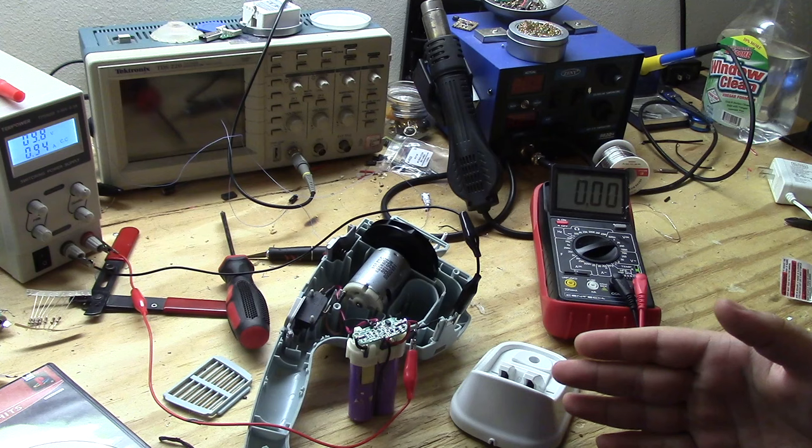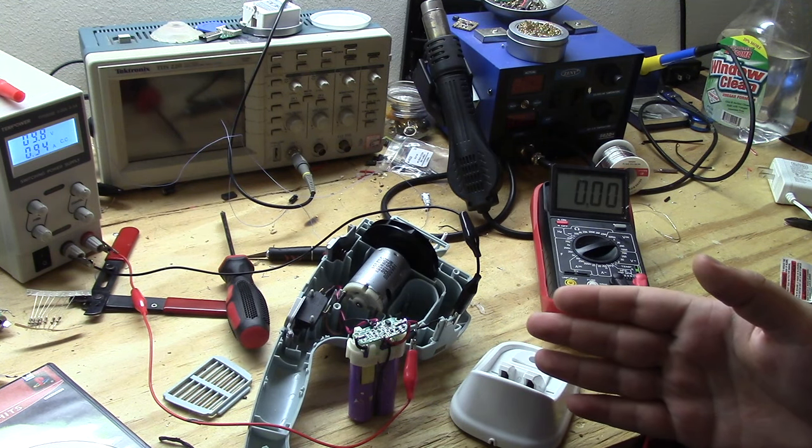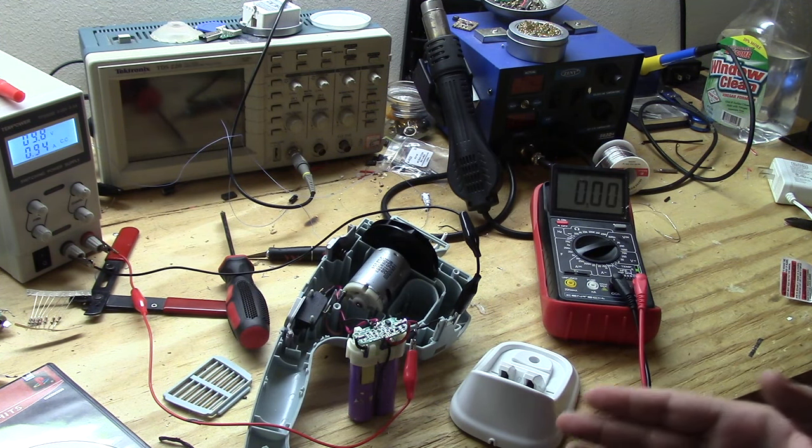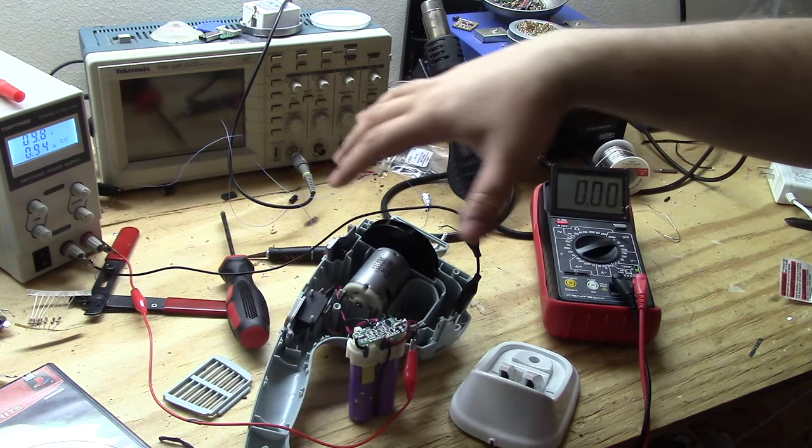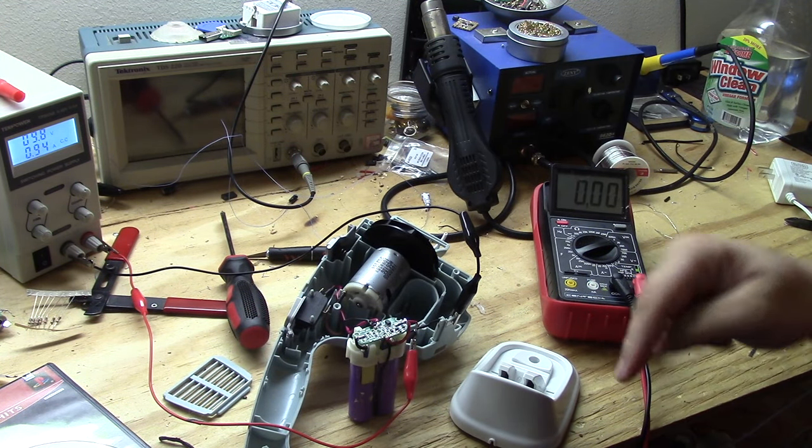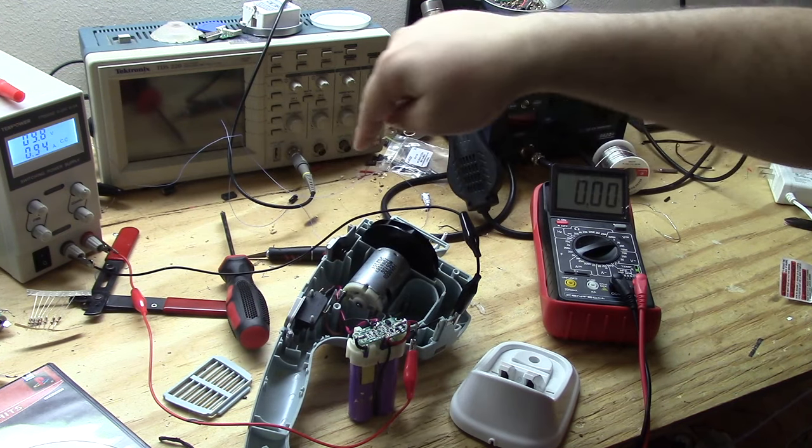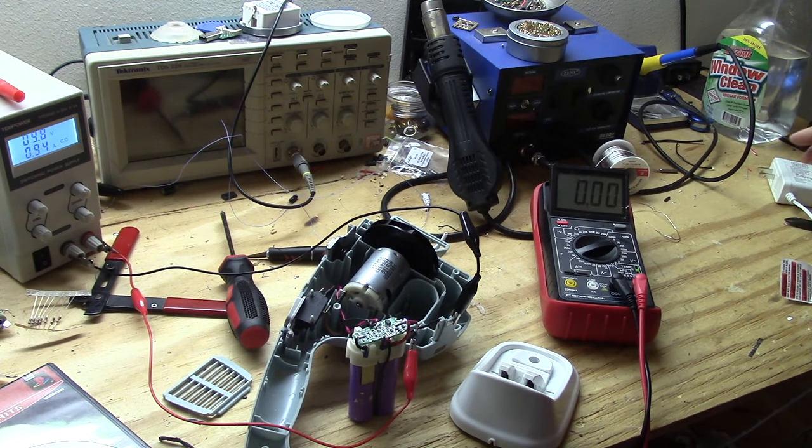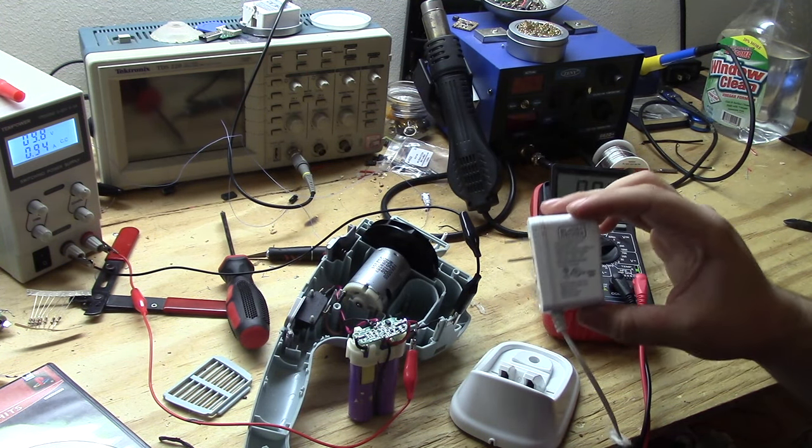It's drawing a decent amount of current from the power supply and it's charging the batteries. So the problem isn't lying within this. So it's not the charge controller, it's not the batteries. So it has nothing to do with the actual unit itself. So there's only one thing left to look at and that is the power supply the unit came with.